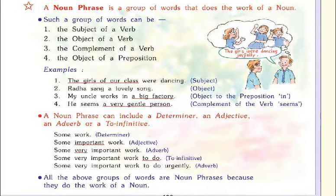Like: 'some work' — used as a determiner. 'Some important work' — 'important' is an adjective. 'Some very important work' — 'very' is used as an adverb. 'Some very important work to do' — that is a to-infinitive. 'Some very important work to do urgently' — 'urgently' is used as an adverb. All the above groups of words are noun phrases because they do the work of a noun.